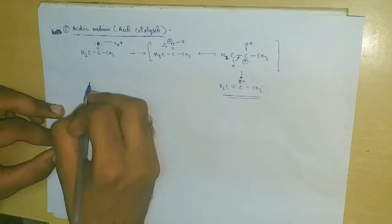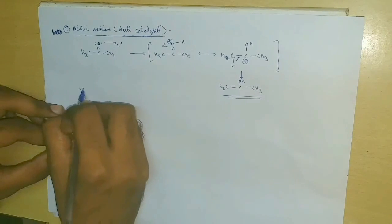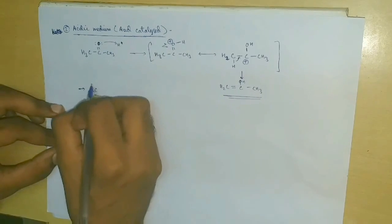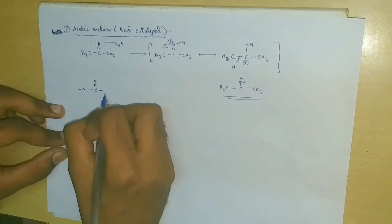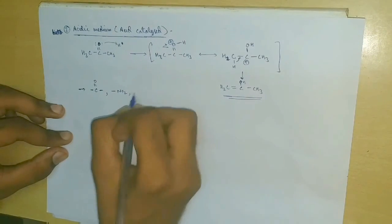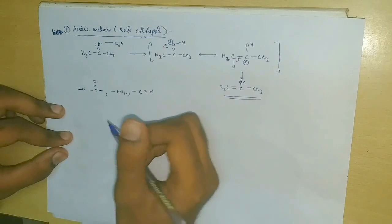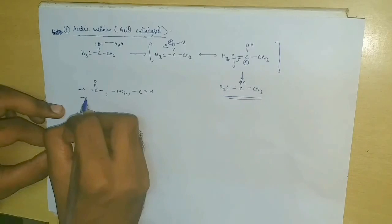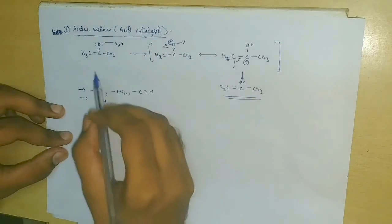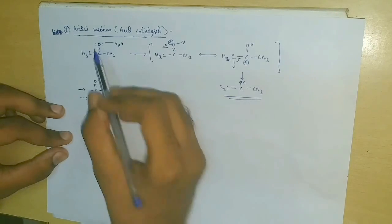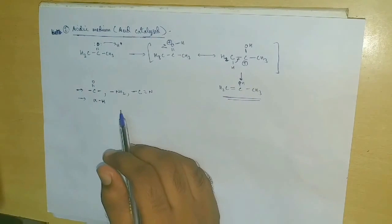Going through both the mechanisms, we can infer that for a compound to show tautomerism, it should have two characteristics. First, it should have an electron-withdrawing group such as carbonyl, nitro, or cyanide. The second requirement is that the compound must have a hydrogen atom at the alpha position, or alpha hydrogens, the presence of which was paramount in both the mechanisms.